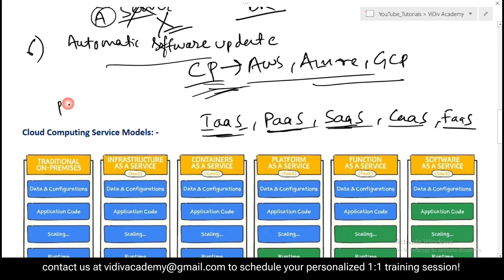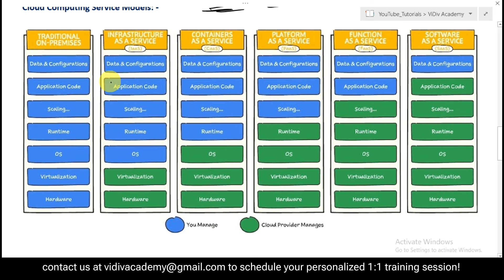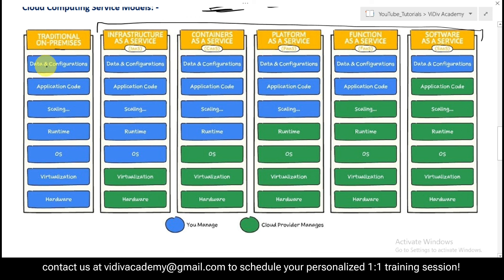It's based on a pay-per-use model — you pay a subscription or based on consumption to access what you need on demand via an internet connection. Now let's see what exactly IaaS, PaaS, and SaaS are in depth. This diagram shows all the computing service models that any cloud computing provider offers.